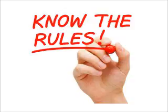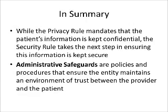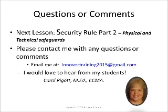HIPAA mandates that the covered entity respond to the breach in a way that would remedy the breach in security. Patients have a right to know if their information has had an unauthorized access. In summary, while the privacy rule mandates that the patient's information is kept confidential, the security rule takes the next step by indicating the steps needed to ensure this information is kept secure. Administrative safeguards are the policies and procedures that ensure the entity maintains an environment of trust between the provider and the patients. In the next lesson we'll go further in the security rule explained part two, covering physical and technical safeguards. Please be sure to take the assessment quiz, as those questions are helpful in preparing you for the HIPAA final exam. This is Carol Bajot from Innovate Training — see you in the next lesson.